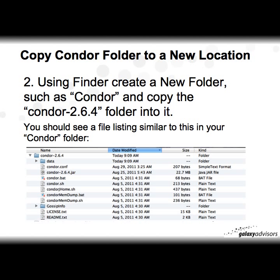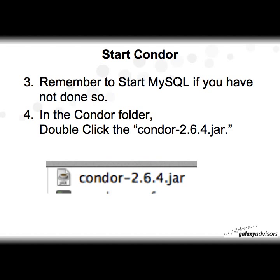Step two is to copy the folder to a new location. Using Finder, create a new folder such as Condor and copy the Condor-264 folder into it. You should see a file listing similar to what is shown in your Condor folder.